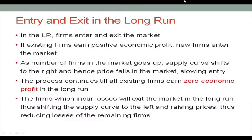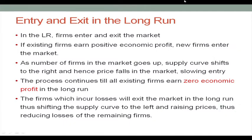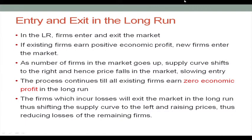Moving on to the long run — in the long run there is entry and exit in the market. If existing firms earn positive economic profit, new firms enter the market. As the number of firms increases, the supply curve shifts to the right and prices fall, slowing entry. This process continues until all existing firms earn zero economic profit. Firms incurring losses will exit the market in the long run, shifting the supply curve to the left and raising prices, thus reducing losses of remaining firms.